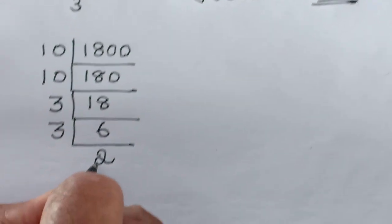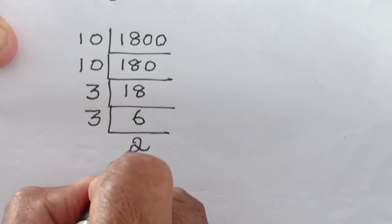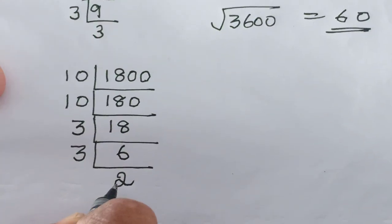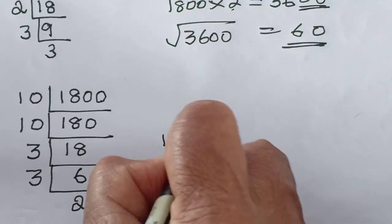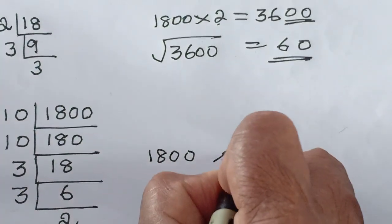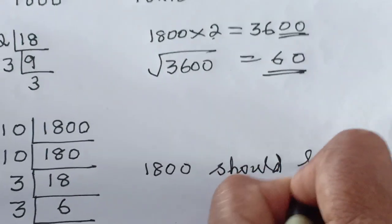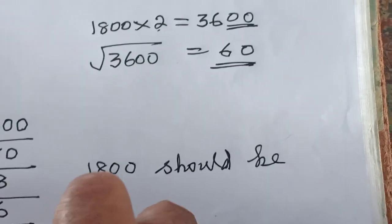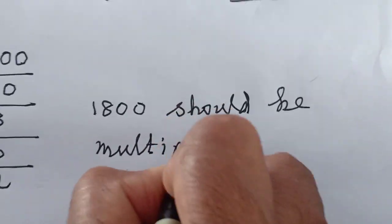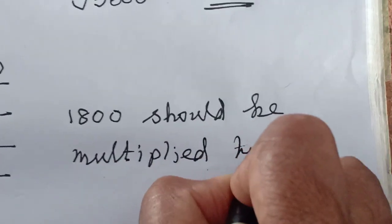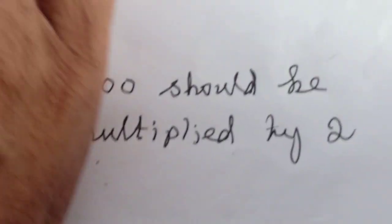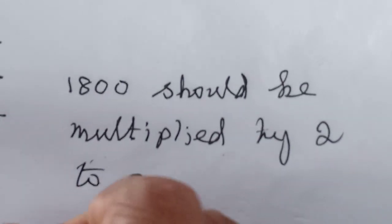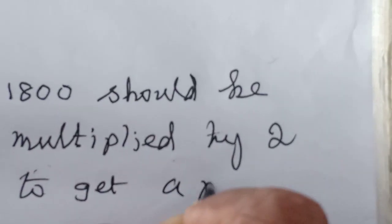So this 2 does not have a pair. So 1800 should be multiplied by 2 to get a perfect square.